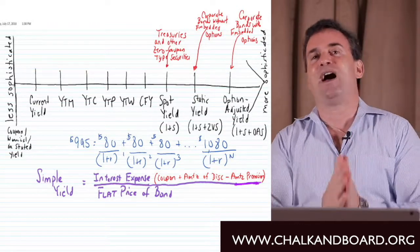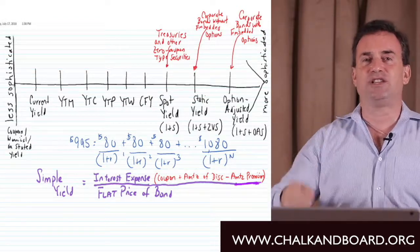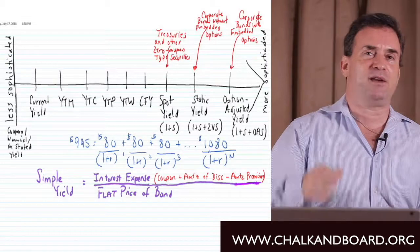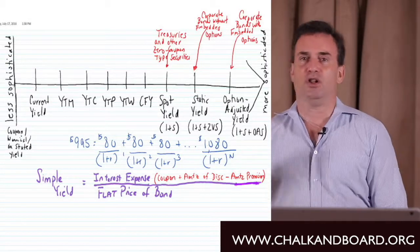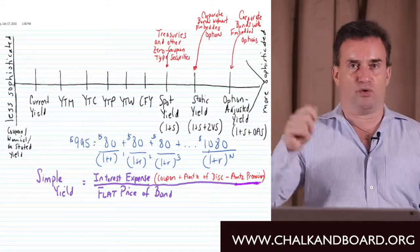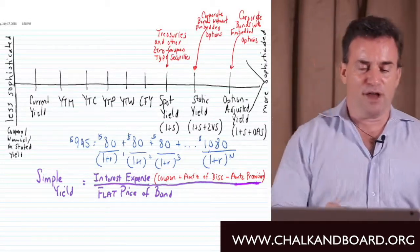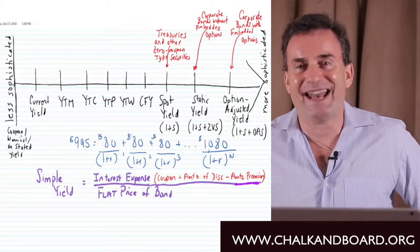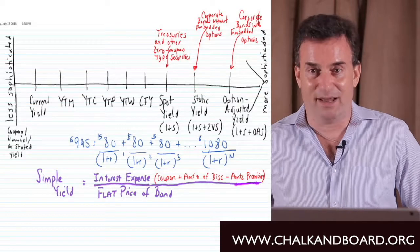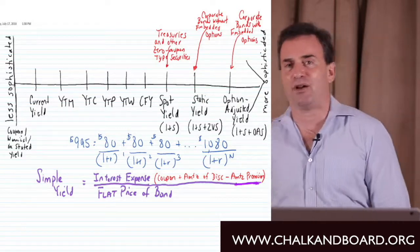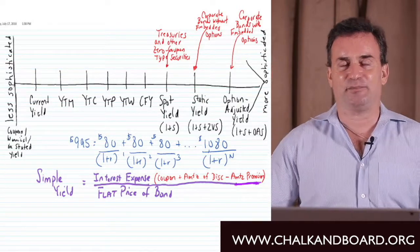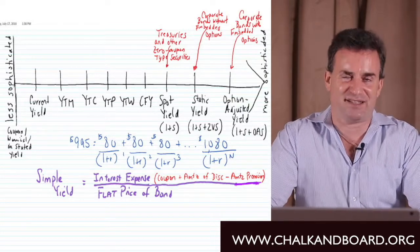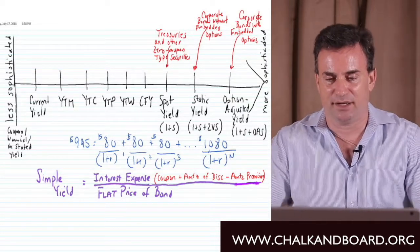We need to take the spot rates and then adjust each of those spot rates by a spread — a spread that will compensate for the additional credit risk. So we would need to add some kind of spread. We call that spread the static spread, the Z-spread, or the ZVS — the zero volatility spread.